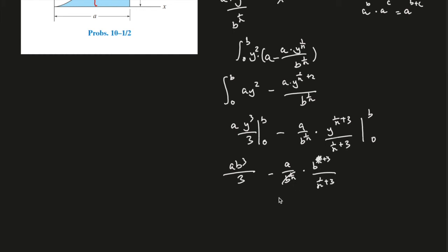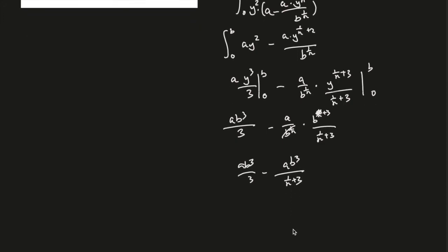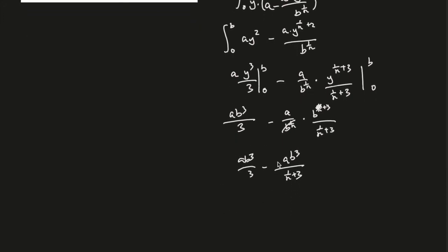And this part cancels out. So now it's ab over 3 minus ab to the power of 3 over 1 over n plus 3. Okay, and now see we have the common numerator, so we can simplify it down even more: 1 over 3 minus 1 over n plus 3.